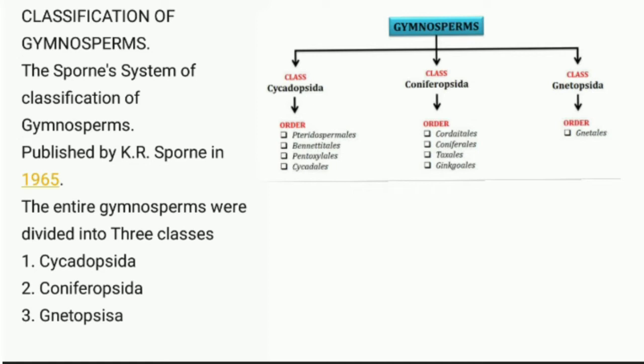Sporn divided Gymnosperms into three classes: the first is Cycadopsida, the second is Coniferopsida, and the third is Gnetopsida.